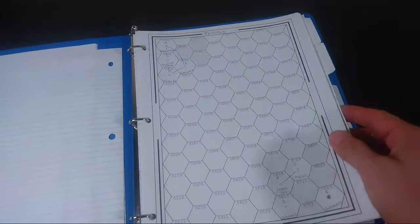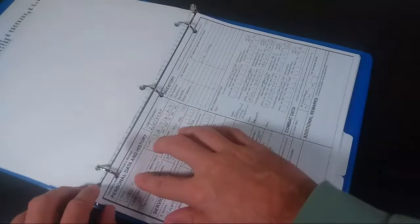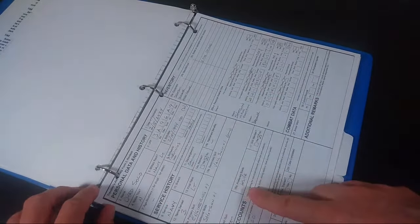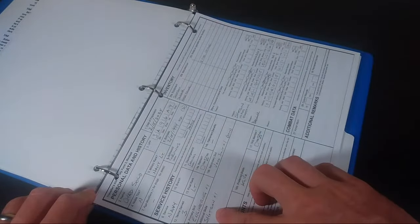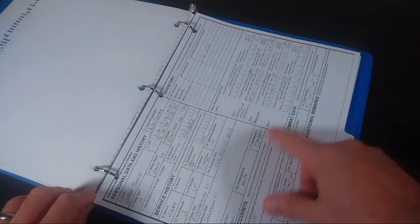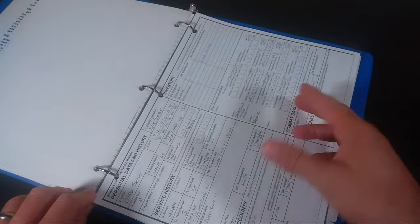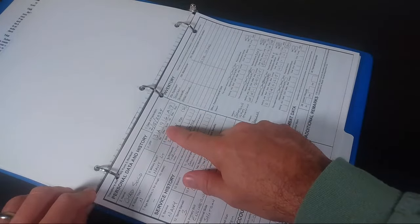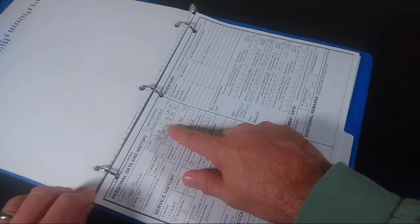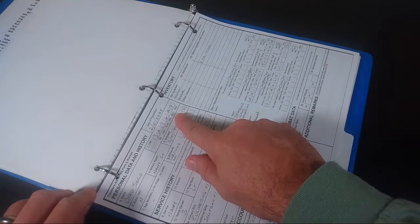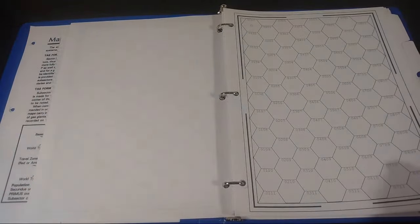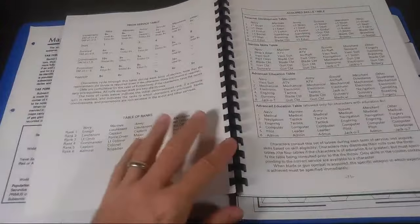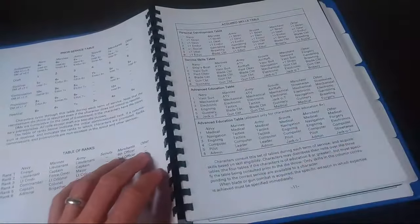I prepared the personal data and history sheet for our guy, and I realized while I was filling this out that I did the skills wrong. So we need to roll. He's got an education of A, which is a 10. It means I can roll on the advanced skills table, and I'm going to do that right now before we go any further.